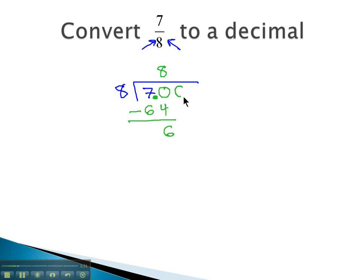Let's bring down another digit. With decimals, there's always zeros to bring down. 8 goes into 60 seven times, because 7 times 8 is 56, and when we subtract, we get 4.